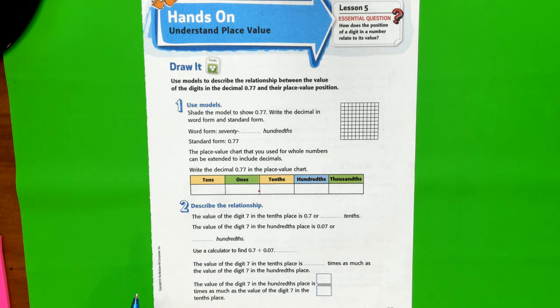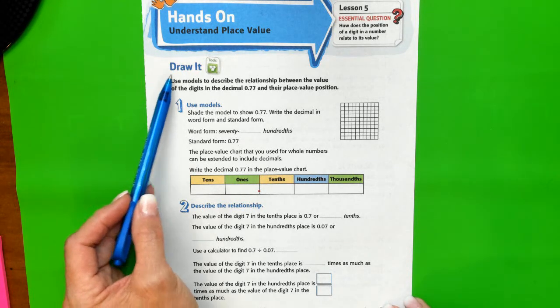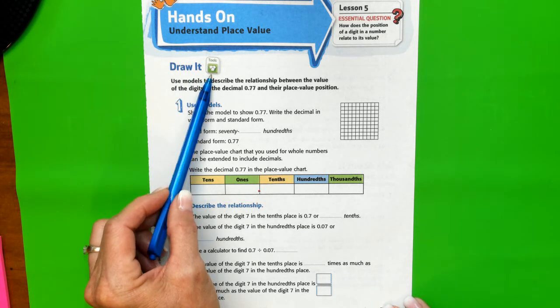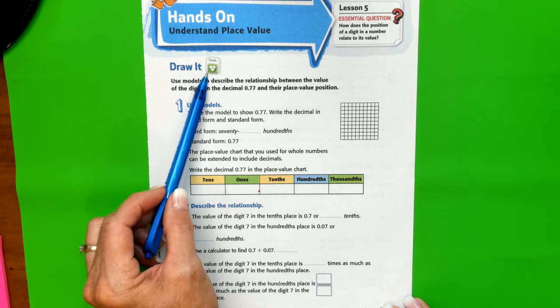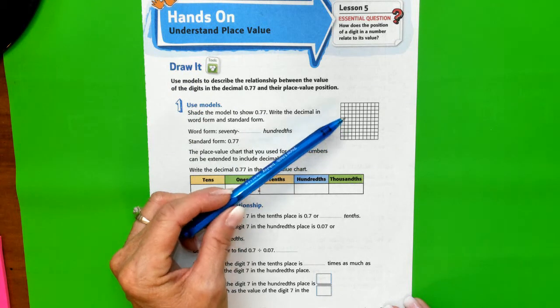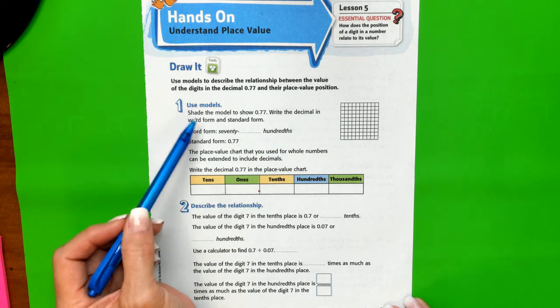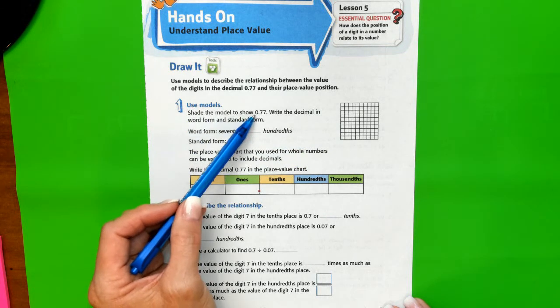Chapter one place value, lesson five: hands-on understanding place value. Let's look at our first example. I've said this in a previous lesson - you can go to your tools in your online curriculum and you can find work mats in the following grid patterns.